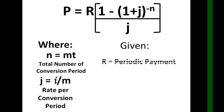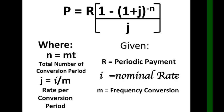So given, these are our givens: R equals periodic payment, i equals nominal rate, m equals frequency conversion, and t equals time in years. Later on you will understand what this m is all about, but in the previous videos I already discussed m and time in years.